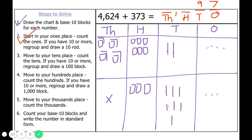Let's count our hundreds. We count nine hundreds — we know we can't regroup with nine pieces, so we are going to have nine hundreds. Let's count our thousands. We have four thousands — we know we cannot regroup with four. So our sum is 4,997. We did not have to do any regrouping here, but we added our pieces together with our base ten blocks.